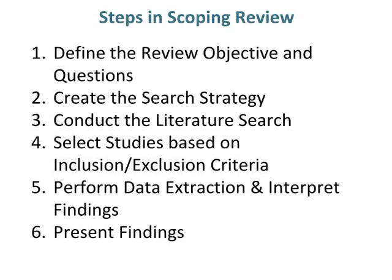There are six steps in a scoping review. Step one: define the review objective and questions. Step two: create the search strategy. Step three: conduct the literature search. Step four: select studies based on inclusion or exclusion criteria. Step five: perform data extraction and interpret findings. Step six: present findings.